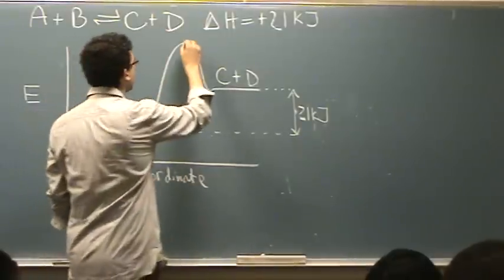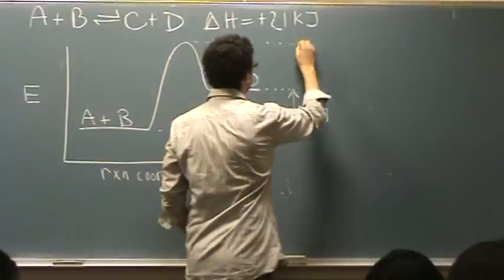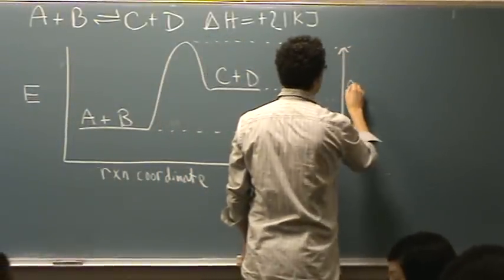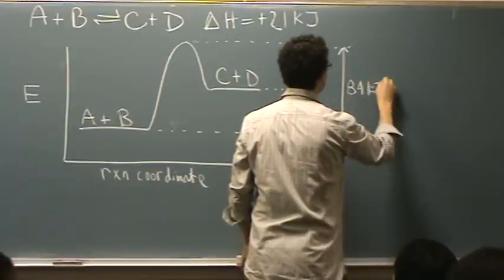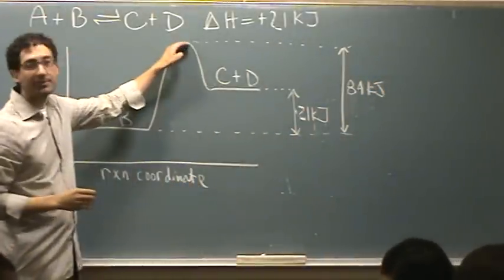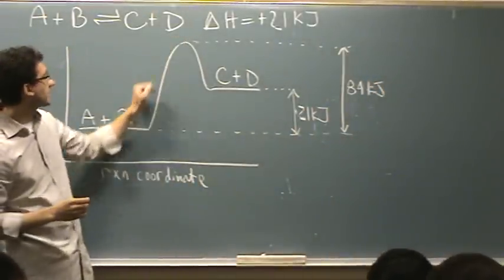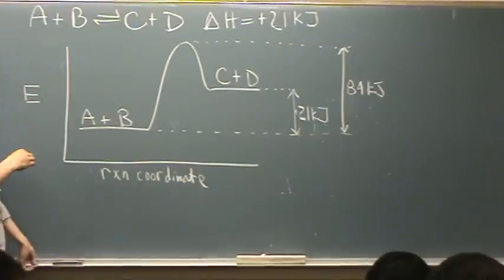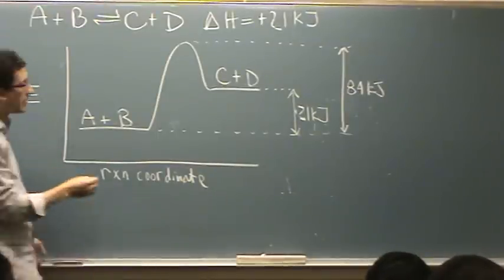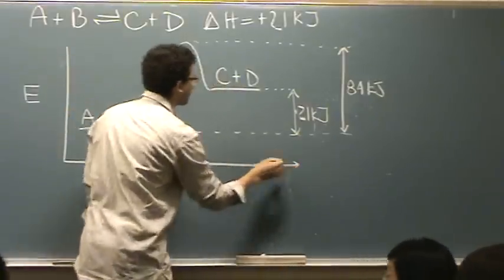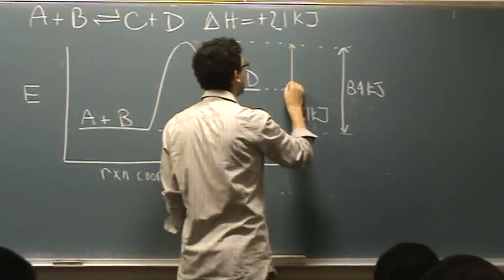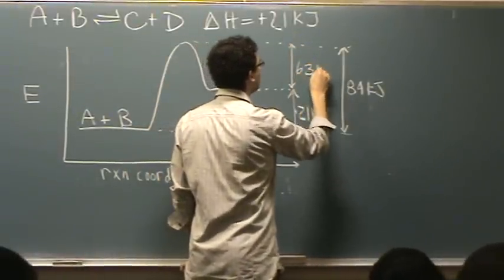So we also know this number: 84 kilojoules. Basically, it's the height of this hump, from the reactant point to the very top of the hump. So if we wanted the activation energy for the reverse reaction, it would just be 84 minus 21, which is 63 kilojoules.